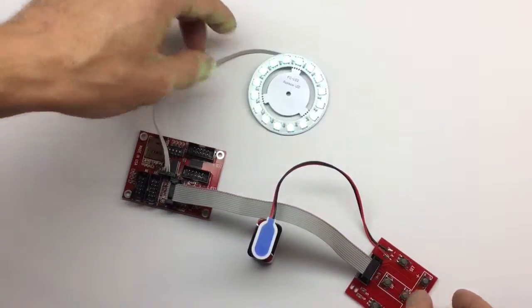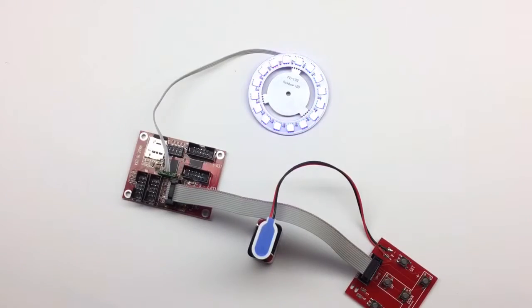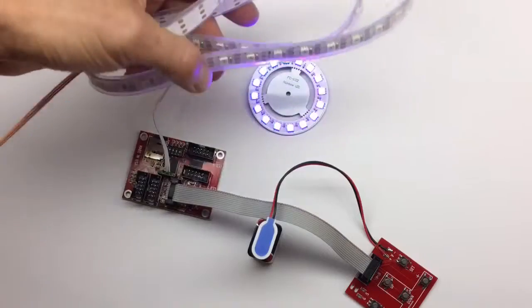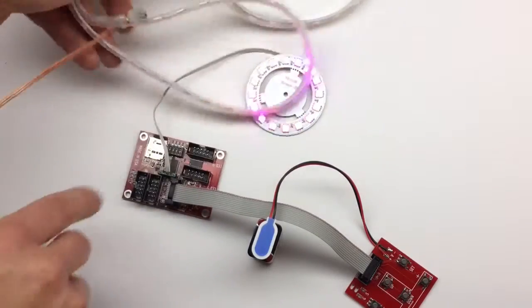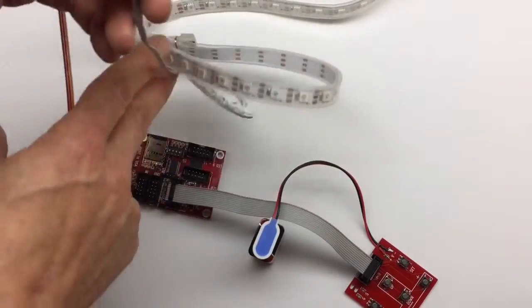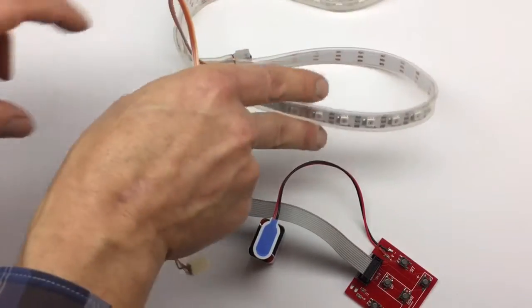It's easy to connect. You can also connect strips like this one. I have about 60 LEDs here, so I'm going to unplug the round board and plug in this strip.